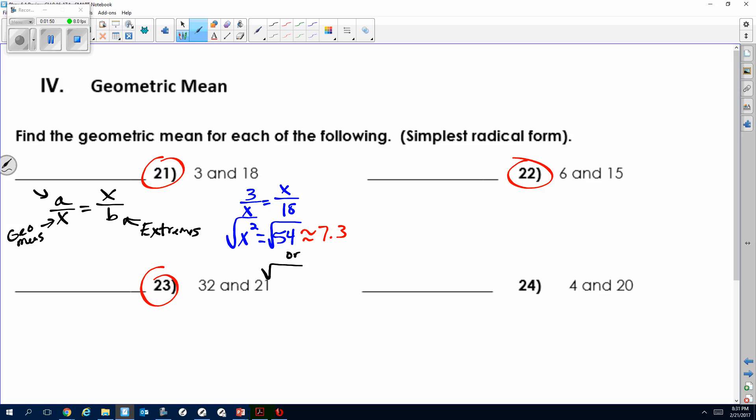When I round this answer, this is approximately 7.3. Now the other thing is I can simplify this. I want to think of factors of 54 that might be a perfect square.